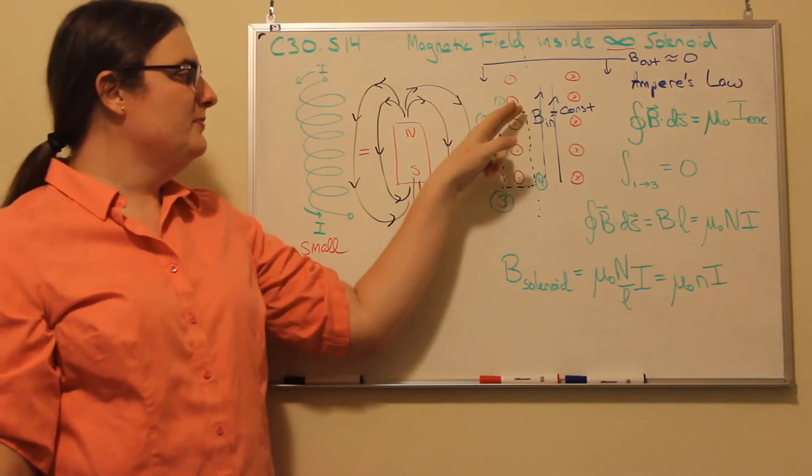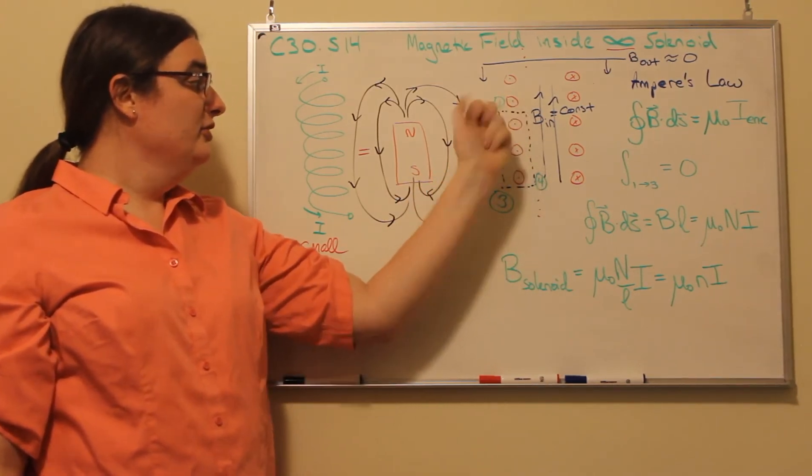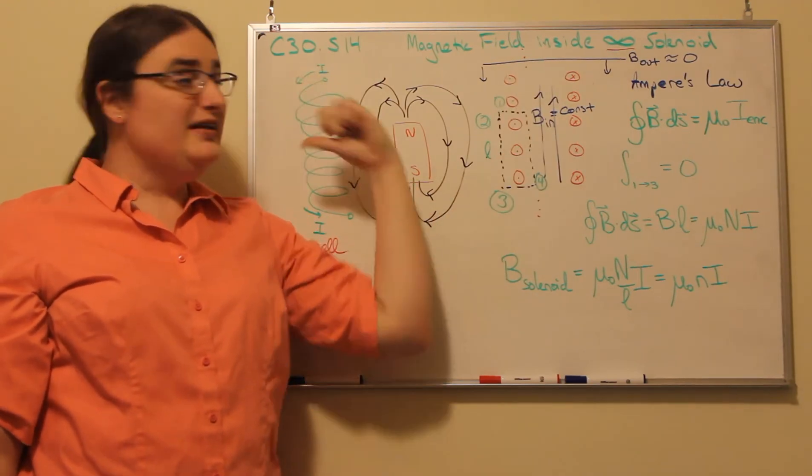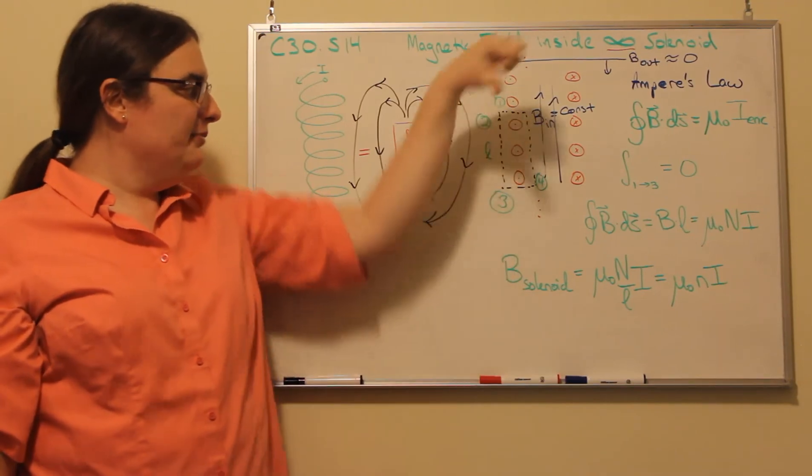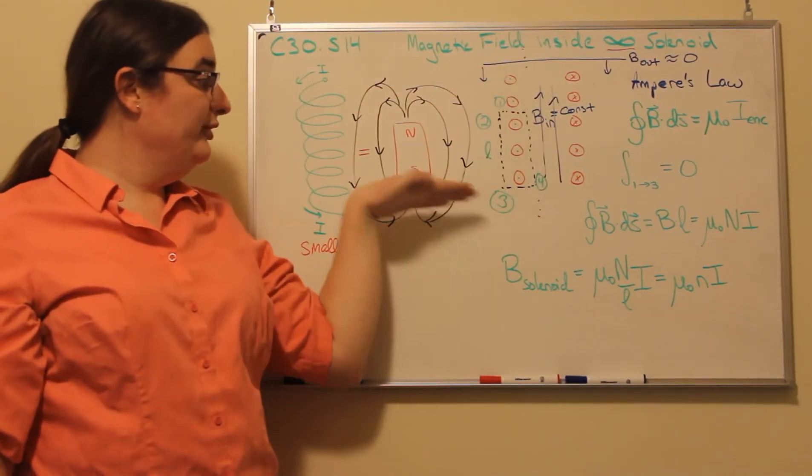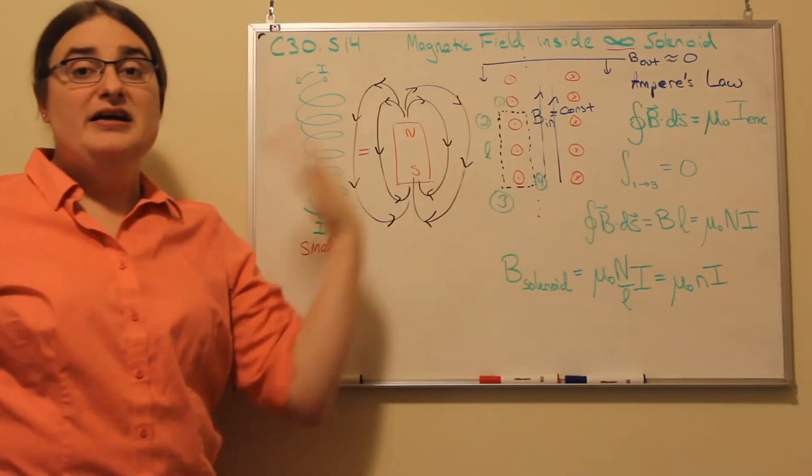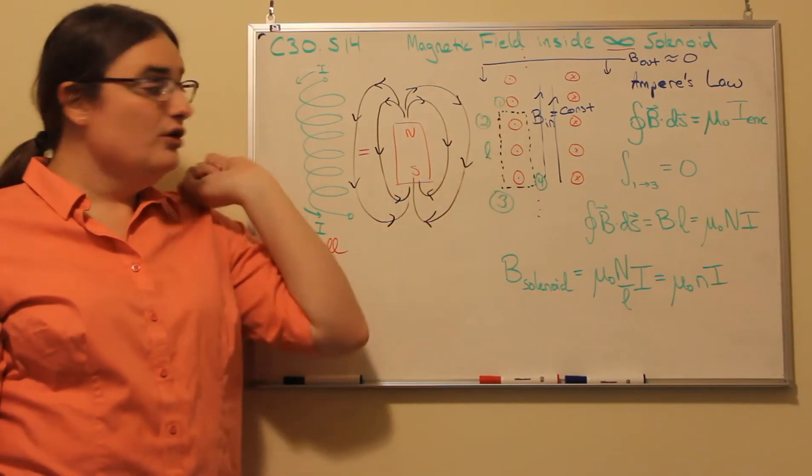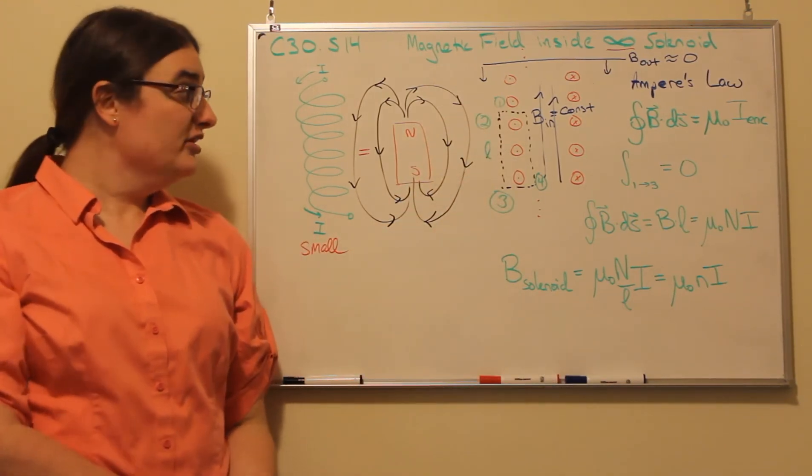If we were to draw an Amperian loop that was just a rectangle that starts at some point, goes out perpendicular to the plane of the coils that I've established, down along the axis of the coil, again perpendicular to that, and then back up in the center of the coil,